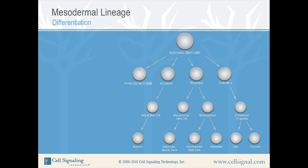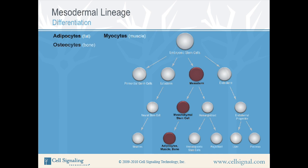Mesodermal Lineage. The second of the primary germ layers is the mesoderm. Cells from the mesoderm differentiate along two diverging pathways. The first branch of mesoderm differentiation consists of mesenchymal stem cells. These cells eventually differentiate into adipocytes (fat), myocytes (muscle), osteocytes (bone), and chondrocytes (cartilage). A number of markers are used to identify cells descending from the mesenchyme.